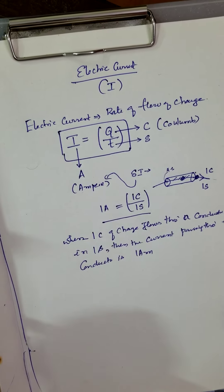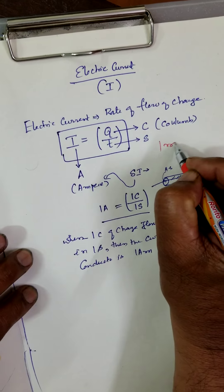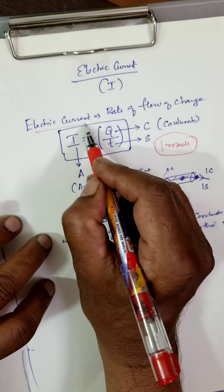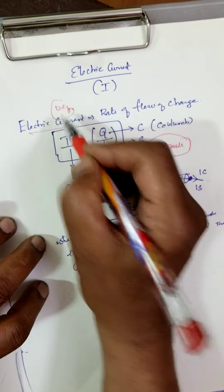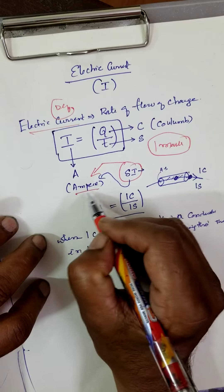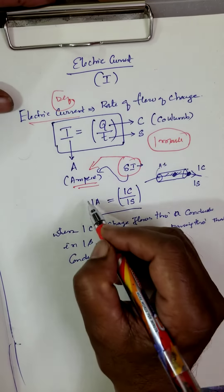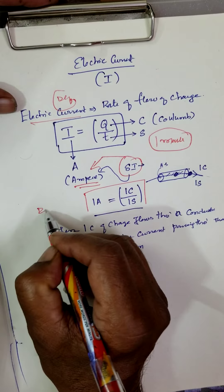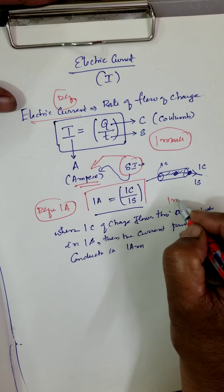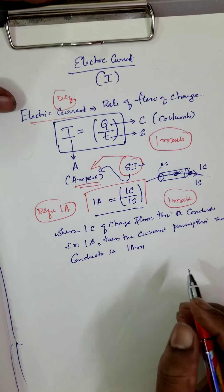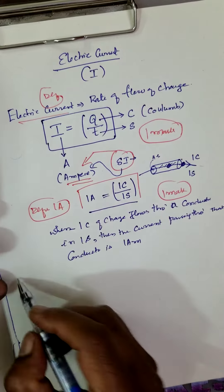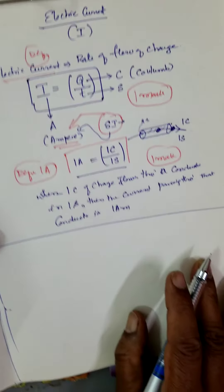Therefore, they may ask you for one mark, what is one Ampere? What is electric current? This is the definition. And SI unit of current is called Ampere. And define one Ampere, this is one mark they may ask you. Therefore, here every line is important.